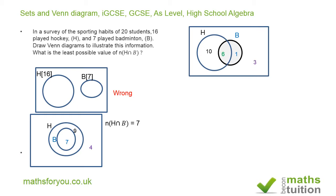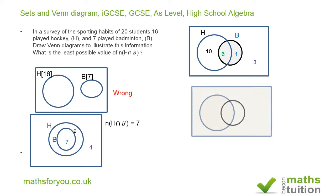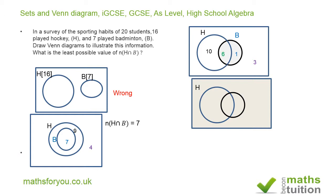If 11 students play just hockey only, then since 16 play hockey in total, 5 must play both hockey and badminton. We need 7 to play badminton, so 2 play just badminton only. Adding 11 + 5 + 2 gives 18, so two students play neither hockey nor badminton.